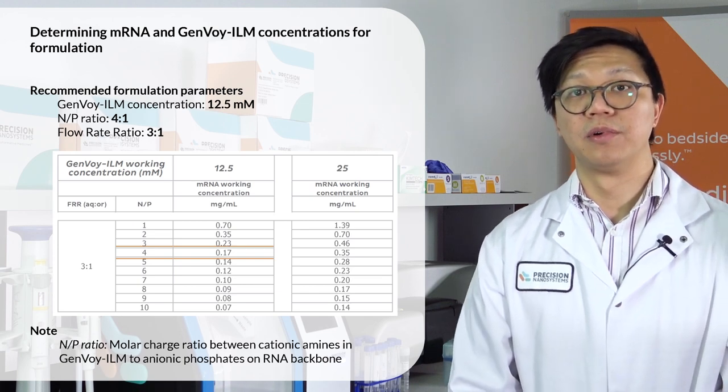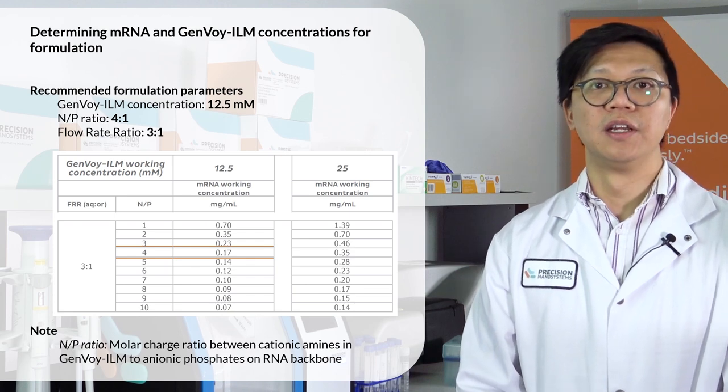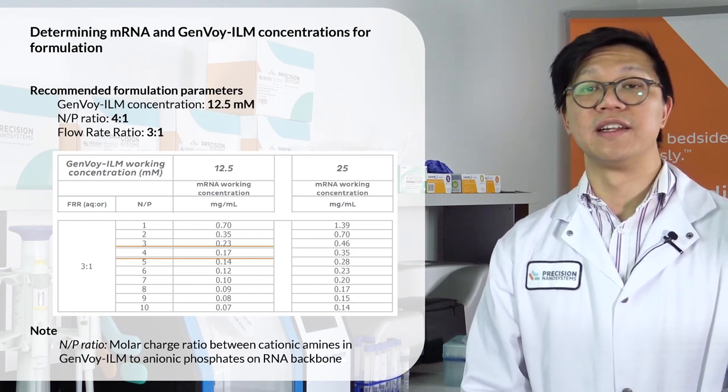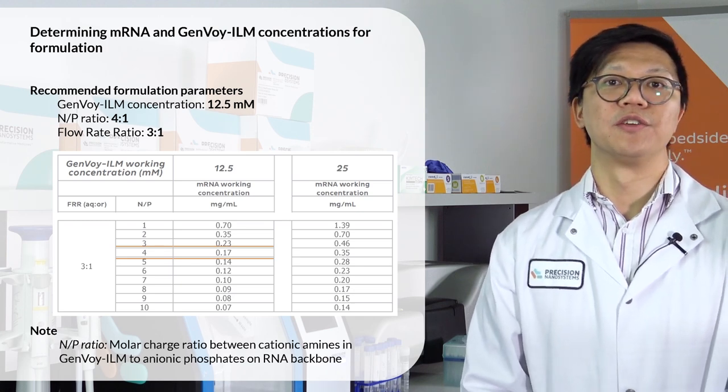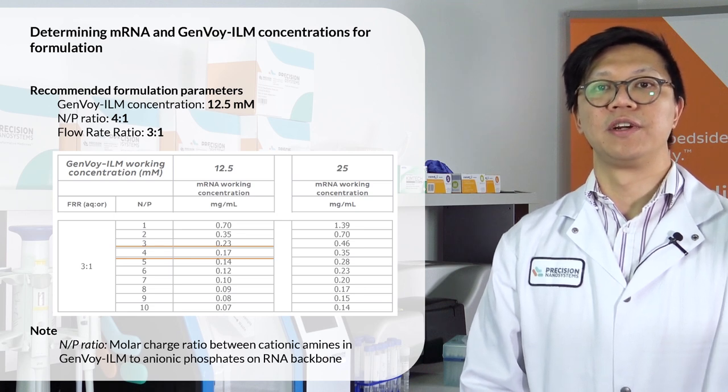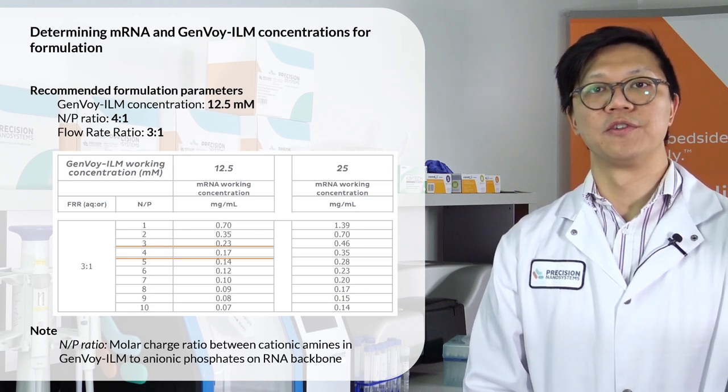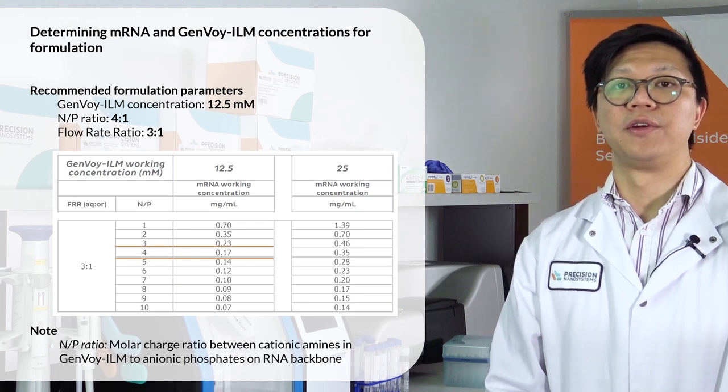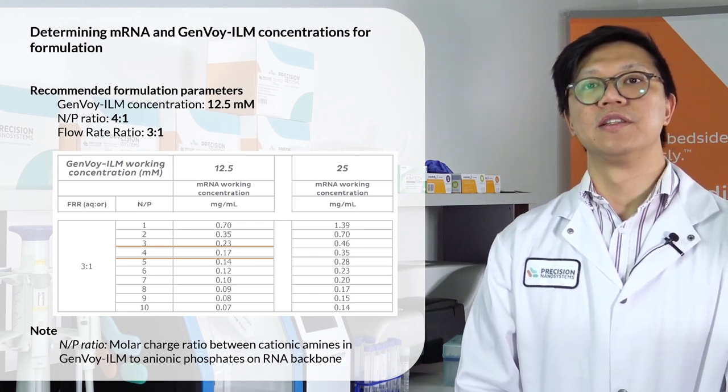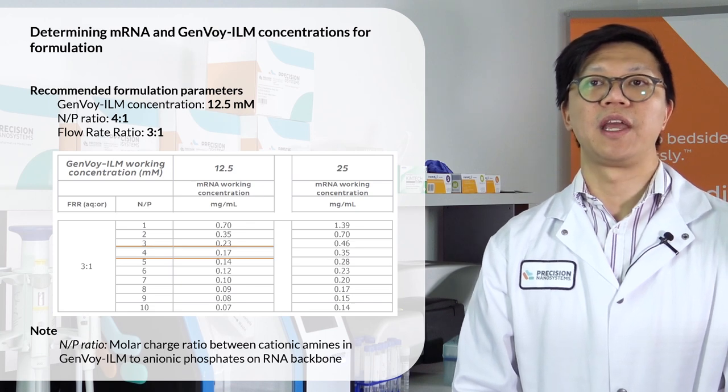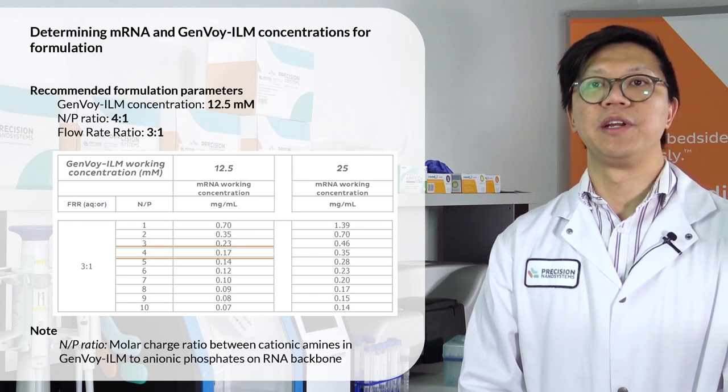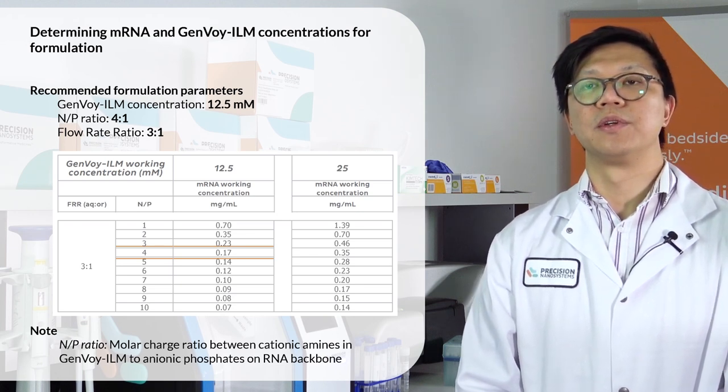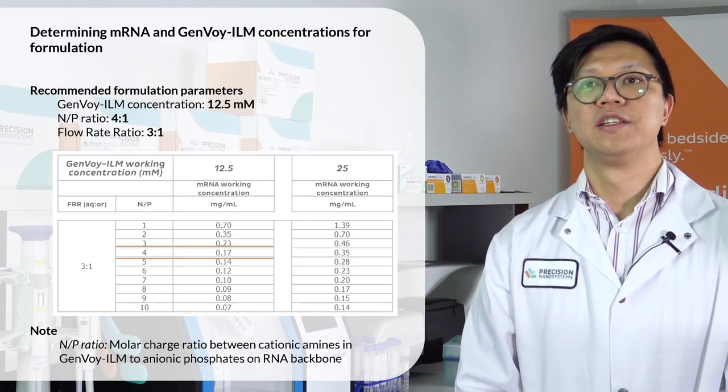For siRNA, for example, the standard N-to-P ratio would be 3-to-1. You can play with N-to-P ratios between 4-to-1 and 6-to-1, but we'll do 4-to-1 for this example. The other parameter you'll need to know is your flow rate ratio, which we'll be choosing as 3-to-1. So using the table that's provided with your GenVoy ILM, you can see that by starting with a working GenVoy concentration of 12.5 mmol, a flow rate ratio of 3-to-1, and an N-to-P ratio of 4, we require a concentration of the RNA to be 0.17 mg per mL.